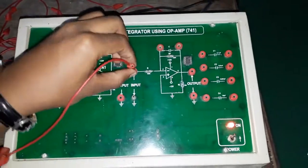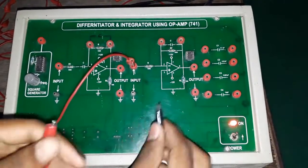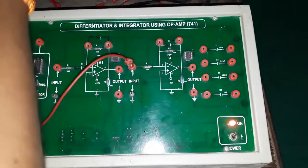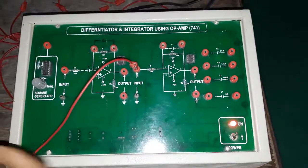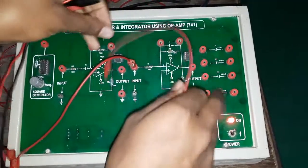From the function generator to this input integrator using op-amp 741, now I'm just connecting to the capacitor. You don't have a capacitor here, so I'm just using this capacitor from here.